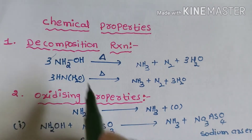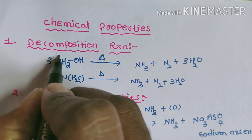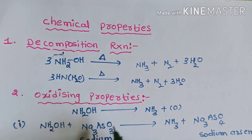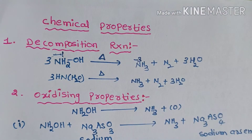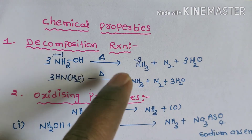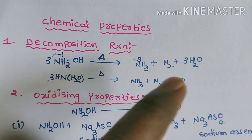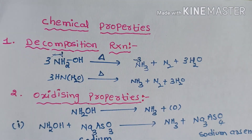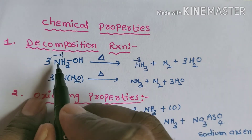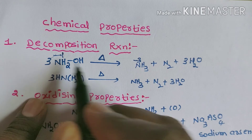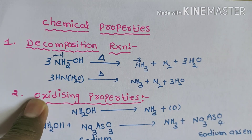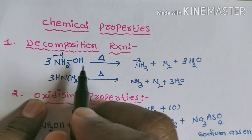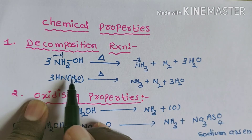Now we study the chemical properties of hydroxylamine. In hydroxylamine, the oxidation state of nitrogen is −1, whereas in ammonia it is −3. When hydroxylamine is heated it decomposes to give ammonia along with nitrogen and water. To balance this equation we put 3 in front of hydroxylamine, since the nitrogen oxidation state changes from −1 to −3.